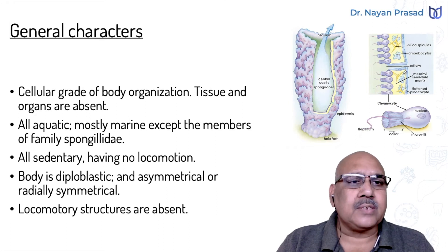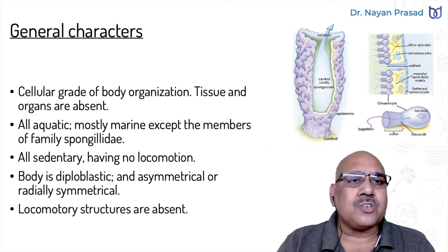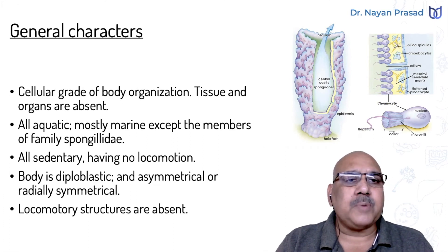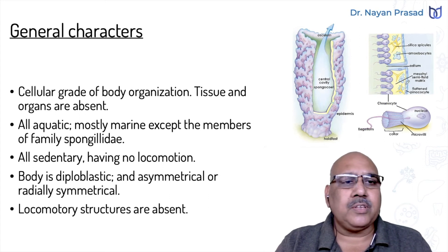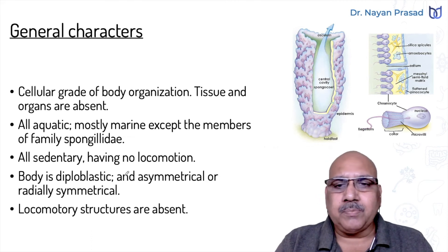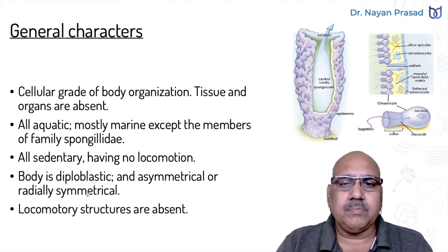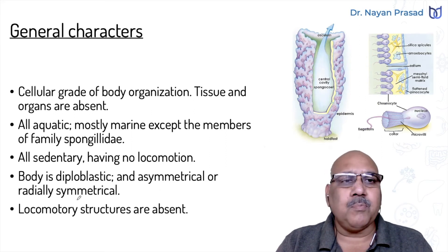In between these two layers, there is a gelatinous substance called mesoglia or mesohyle, in which some spiny skeletal structures called spicules are seen. The members of this phylum may be asymmetrical or radially symmetrical. Asymmetrical means no two sides are similar; radially symmetrical means body parts are radially arranged around a central axis.